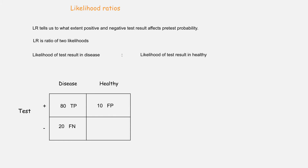Similarly, the probability of a negative test result in the presence of disease is 20%, which is also equal to false negative results. The probability of a negative test result in a person who is healthy is 90%, which is also equal to true negative results. So the negative likelihood ratio is the ratio of false negative to true negative results, which in this case will be 20:90 or 2:9.